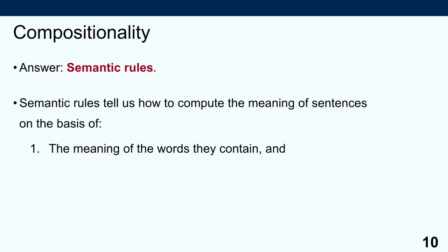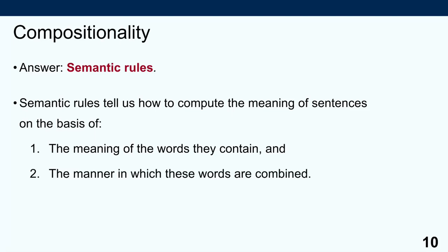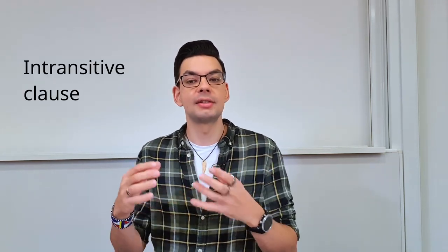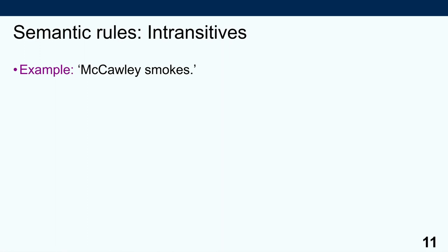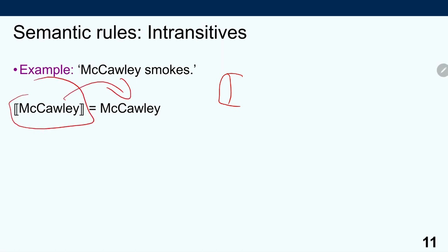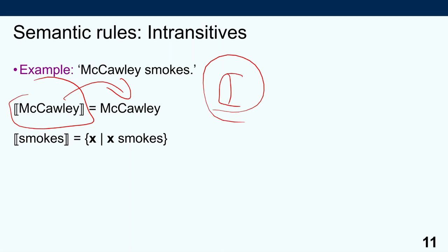Semantic rules tell us how to compute the truth conditions of a sentence based, firstly, on the meaning of individual words and, secondly, on the manner in which these words have been combined. As our first example, let's understand how we arrive at truth conditions for an intransitive clause — a verb taking a subject but no object — for example, 'Macaulay smokes.' We use double square brackets to indicate denotation. 'Macaulay' denotes an actual individual called James D. Macaulay. The denotation of 'smokes' refers to the set of all X such that X smokes — the set of all the people who smoke.